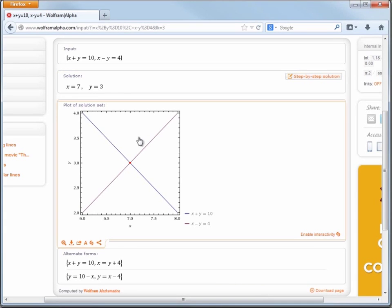And not only that, but a plot. So it's plotting both lines. We can actually see where they intersect. So when x is 7, y is 3, they intersect.